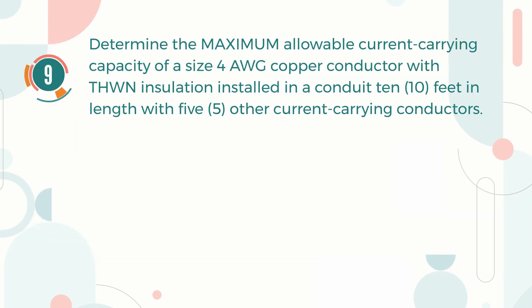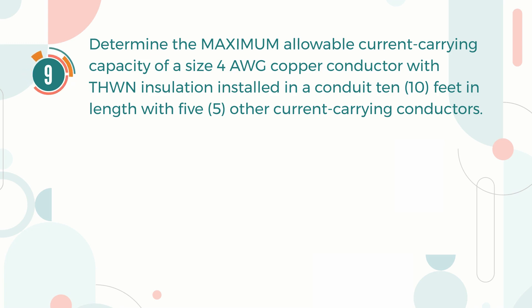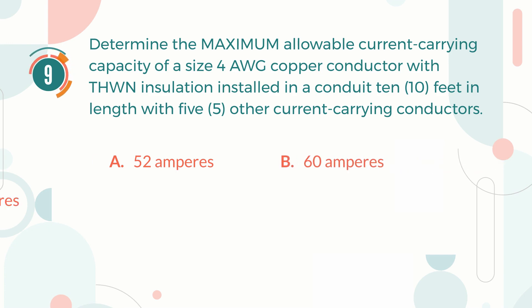Number 9. Determine the maximum allowable current-carrying capacity of a size 4 AWG copper conductor with THWN insulation installed in a conduit 10 feet in length with five other current-carrying conductors. A. 52 A. B. 60 A. C. 68 A. D. 85 A.